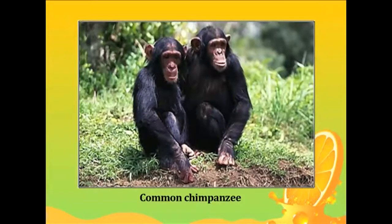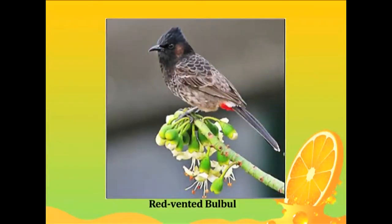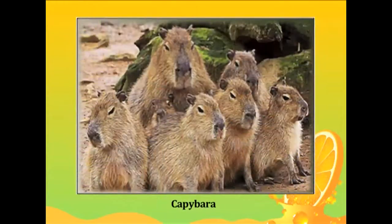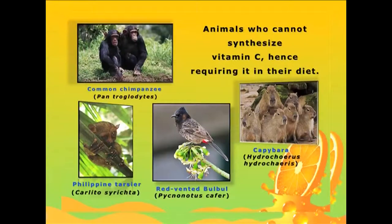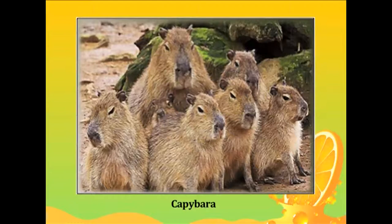This is true for many other animals as well. Most primates including the common chimpanzee, tarsiers, red-vented bulbuls, and capybaras are also among those who cannot synthesize vitamin C and hence require it in their diet. Capybaras are the largest rodents found in the plains of the Amazon river.